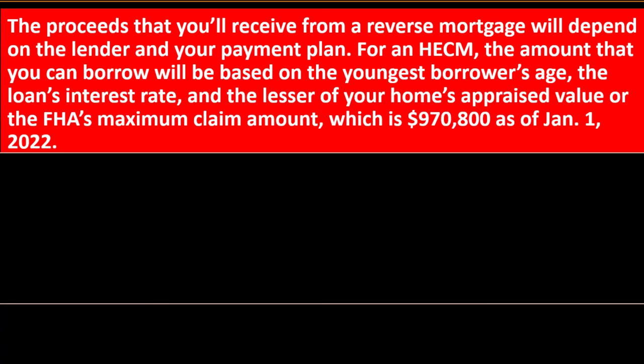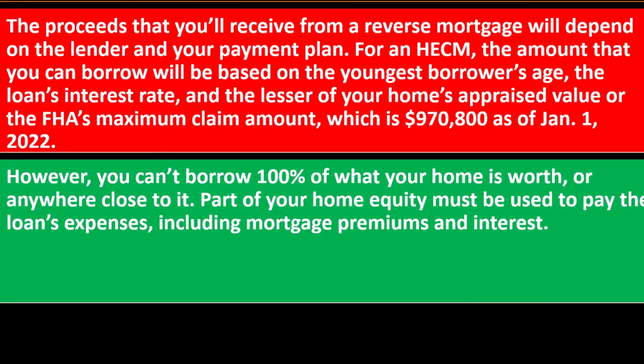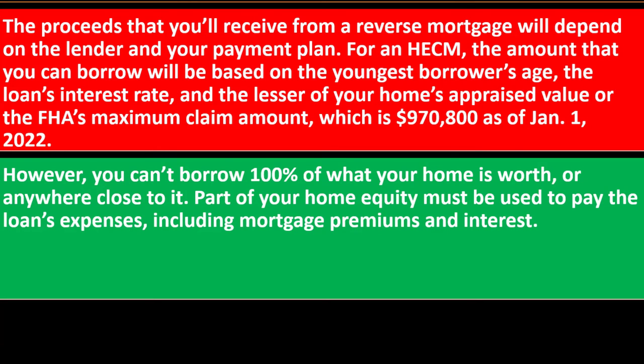How much can you borrow with a reverse mortgage? The proceeds depend on the lender and your payment plan. For a HECM, the amount you can borrow will be based on the youngest borrower's age, the loan's interest rate, and the lesser of your home's appraised value or the FHA's maximum claim amount — $970,800 as of January 1st, 2022. You can't borrow 100% of what your home is worth, as part of your home equity must be used to pay the loan's expenses, including mortgage premiums and interest.